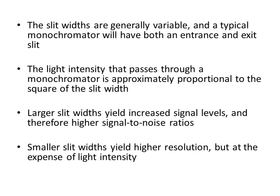Slit width varies according to our needs — sometimes we work on a single wavelength, sometimes on a range. A typical monochromator has both an entrance and exit slit through which light enters and exits. The light intensity passing through a monochromator is approximately proportional to the square of the slit widths — greater slit width means higher intensity.